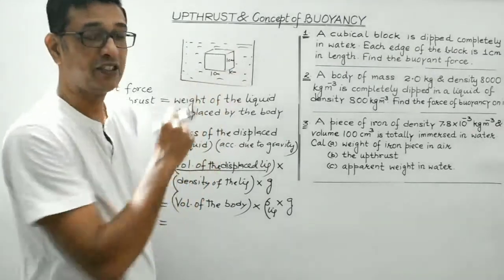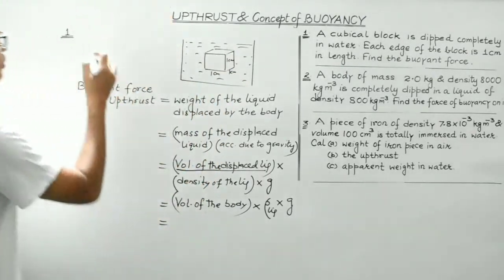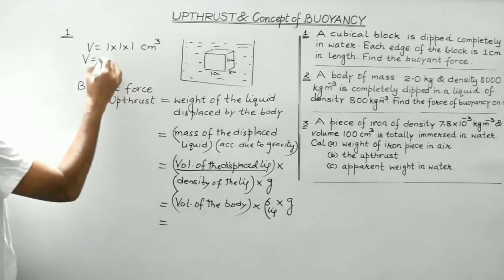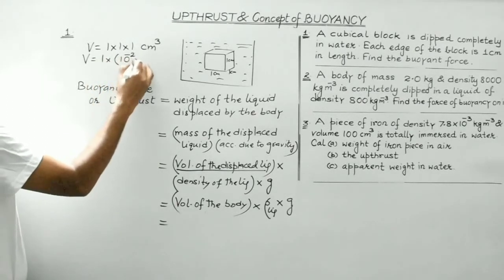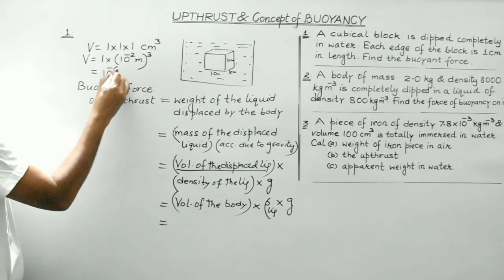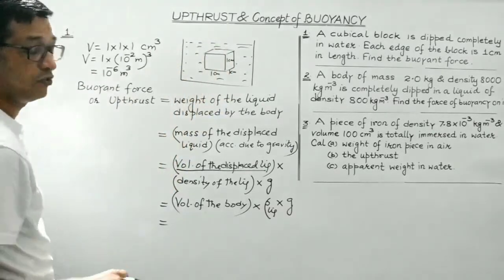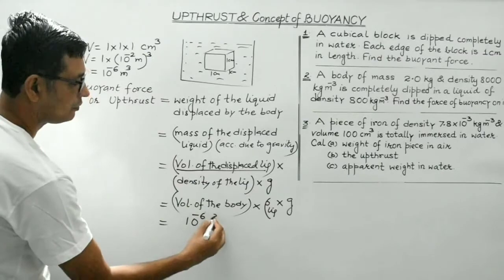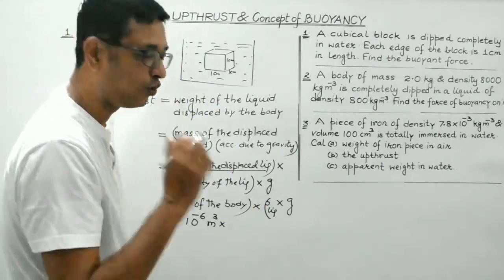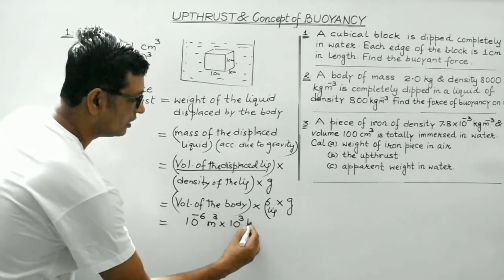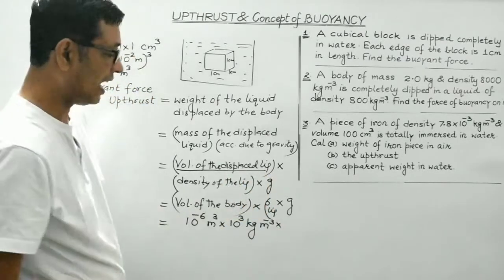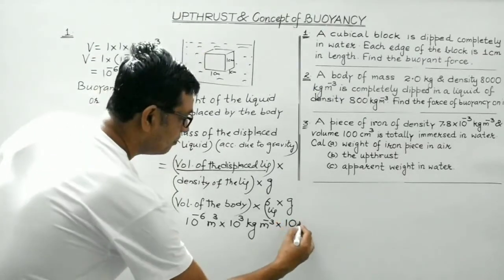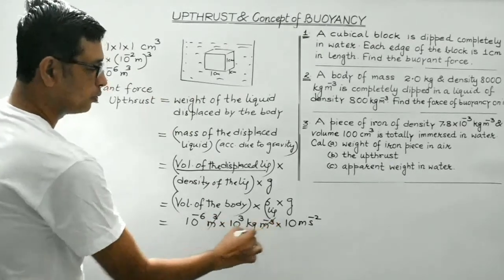Volume of the body = 10⁻⁶ m³. Density of water = 1000 = 10³ kg/m³. Acceleration due to gravity g = 10 m/s² (to simplify calculation). The m³ units cancel out. We get 10⁻⁶ × 10³ × 10 = 10⁻² Newton. So the buoyant force for question 1 is 10⁻² Newton.